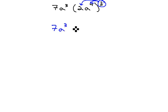7a³ times... Be careful on the 2—the 2 is a base, not an exponent. We multiply exponents, but not bases. We really have 2³ now, which is 8.